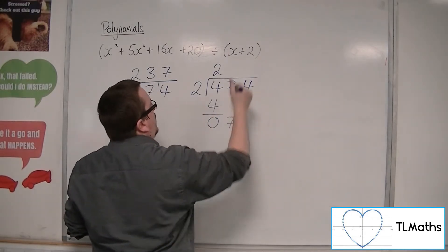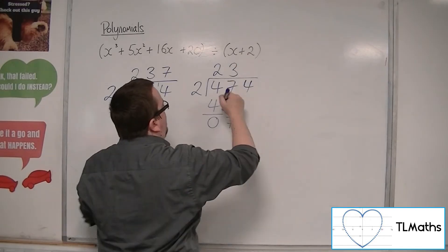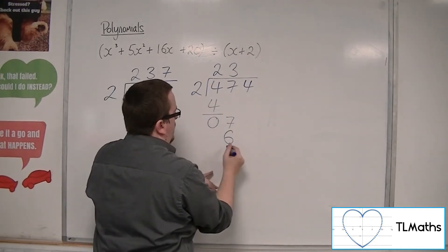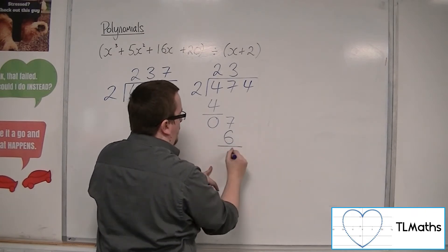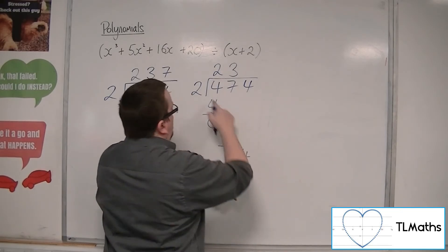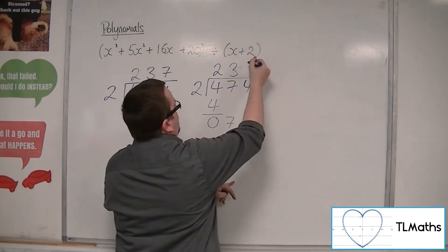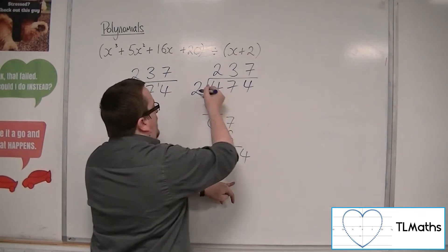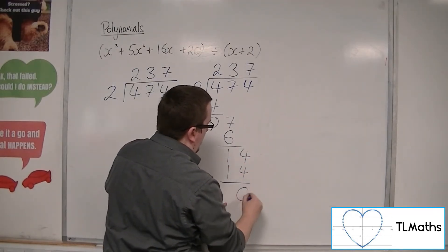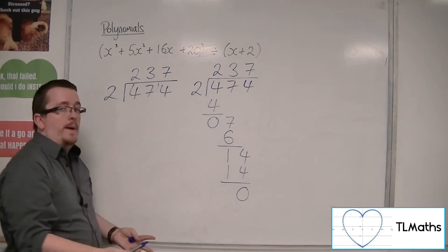2s into 7 go 3, and then you say 3 times 2 is 6. Draw a line, perform a subtraction. Bring the 4 down. 2s into 14 go 7. 7 lots of 2 is 14. Perform a subtraction, you get 0, so there's 0 remainder.